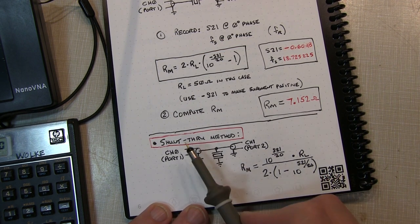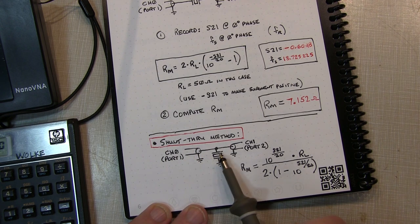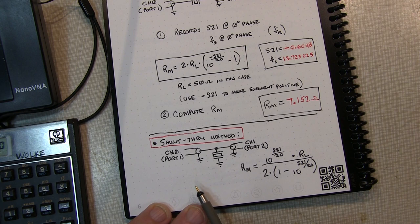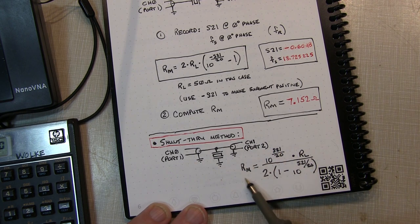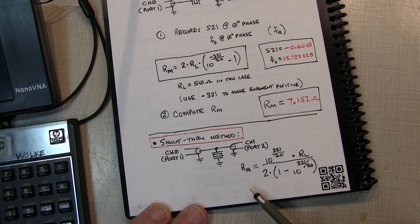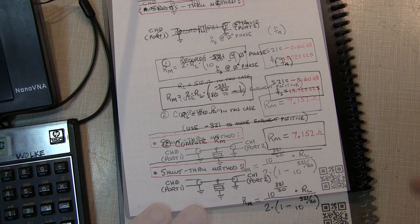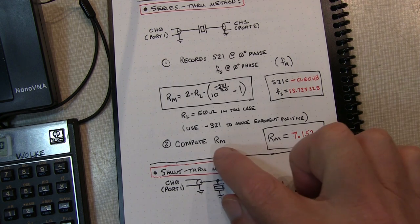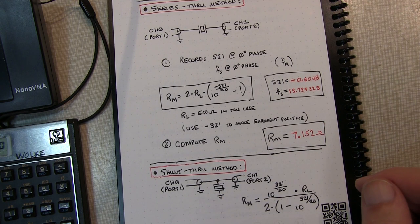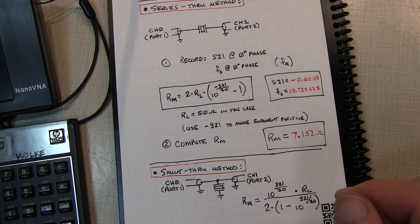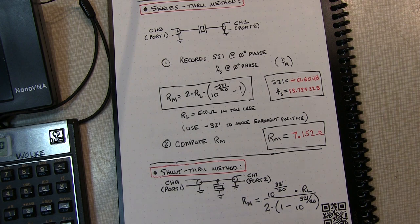You could also run a shunt-through measurement, where the crystal is in shunt measuring straight through with the crystal shunting to ground, and still measure S21 with a slightly more involved calculation. But the series through measurement seems to work pretty well. Now let's focus on the different methods for measuring the motional capacitance and motional inductance.